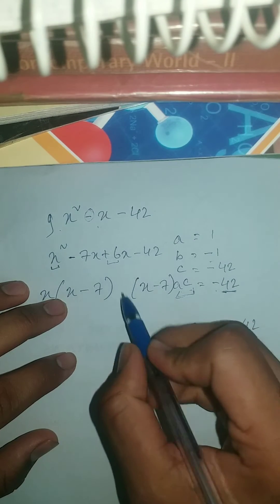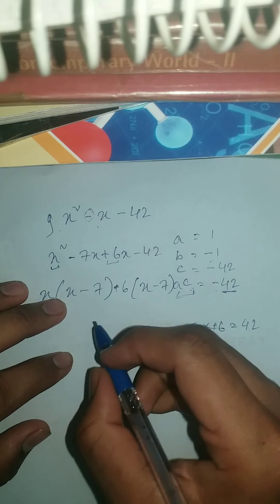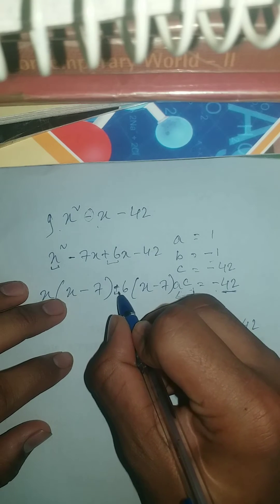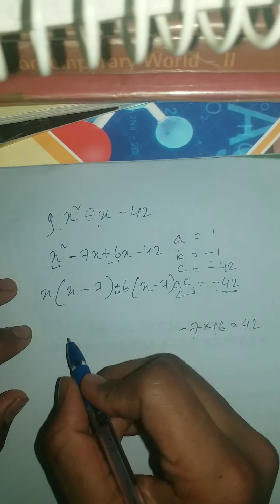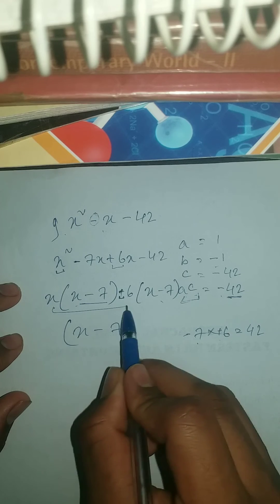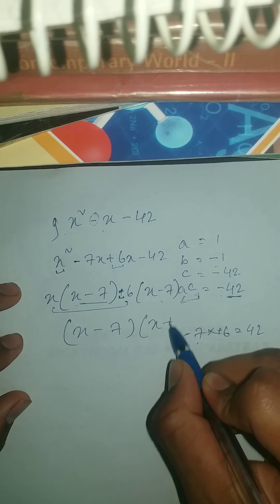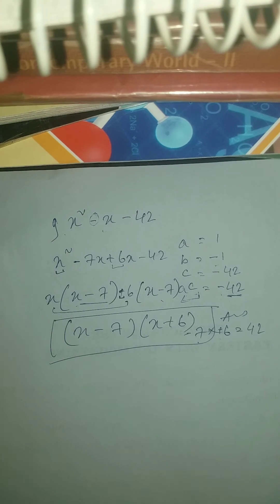Here we're gonna take plus 6 because it's left here. So we're gonna take plus 6. It's important to write, but it's not that much necessary until it is negative. Taking common here, this is common x minus 7. And one more thing is left, it is x plus 6. And this is your answer. Subscribe for more guys. I hope you enjoyed.